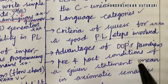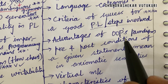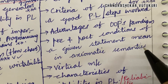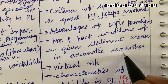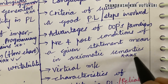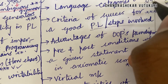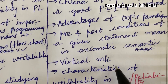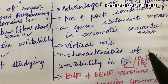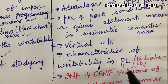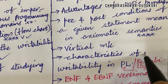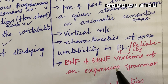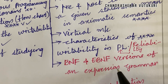This time in the question paper, advantages of BNF and the pre and post conditions of a given statement in axiomatic semantics is said to be a topmost question, which may occur as either 3A or 3B. Define the term virtual machine and explain it. Characteristics of writability or reliability in programming language may also be a 5-mark question.